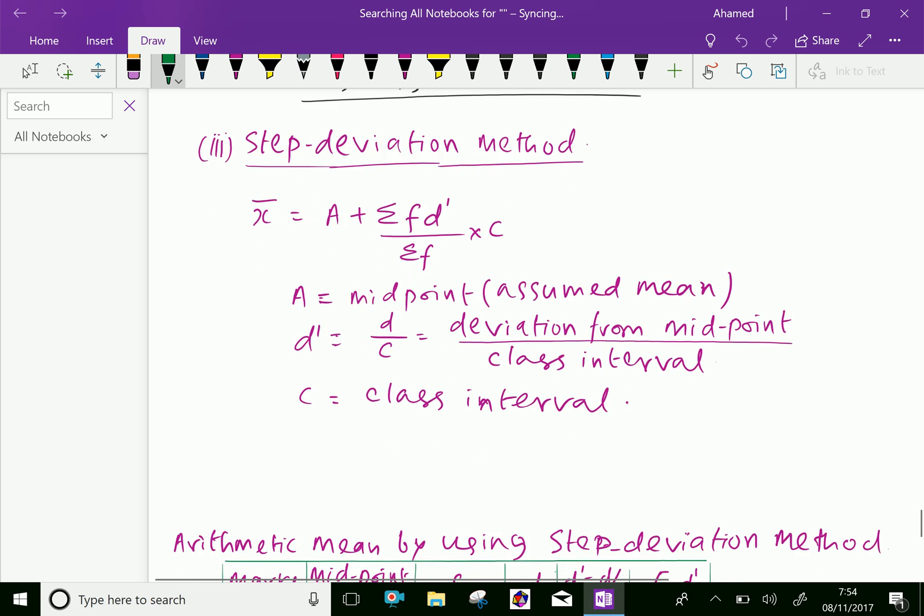In the step deviation method, X̄ (arithmetic mean) equals assumed mean plus sigma f into D' over sigma f into C, where A equals midpoint (assumed mean), D' equals D over C (deviation from midpoint over class interval), and C is class interval.